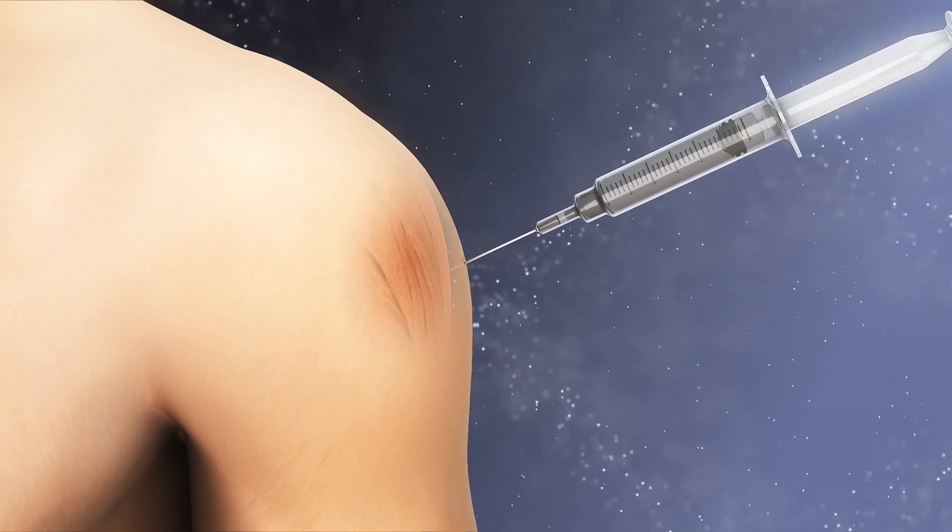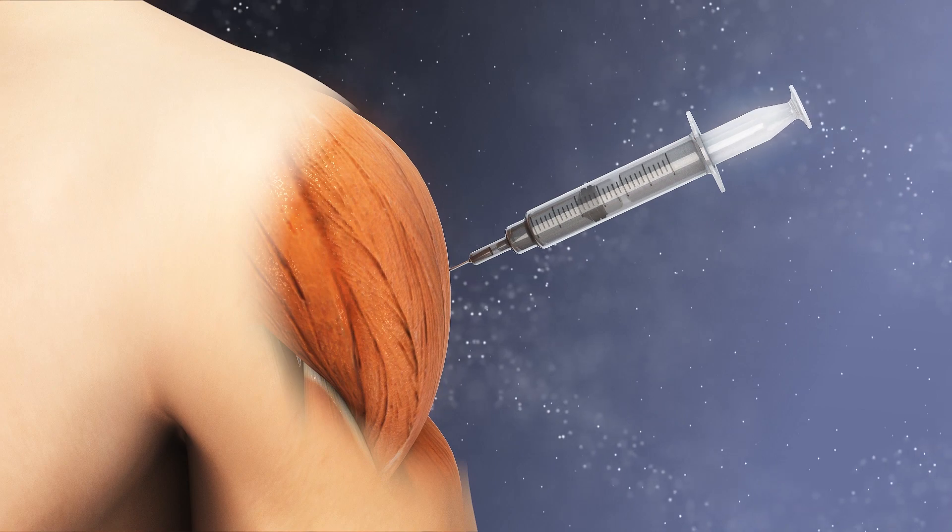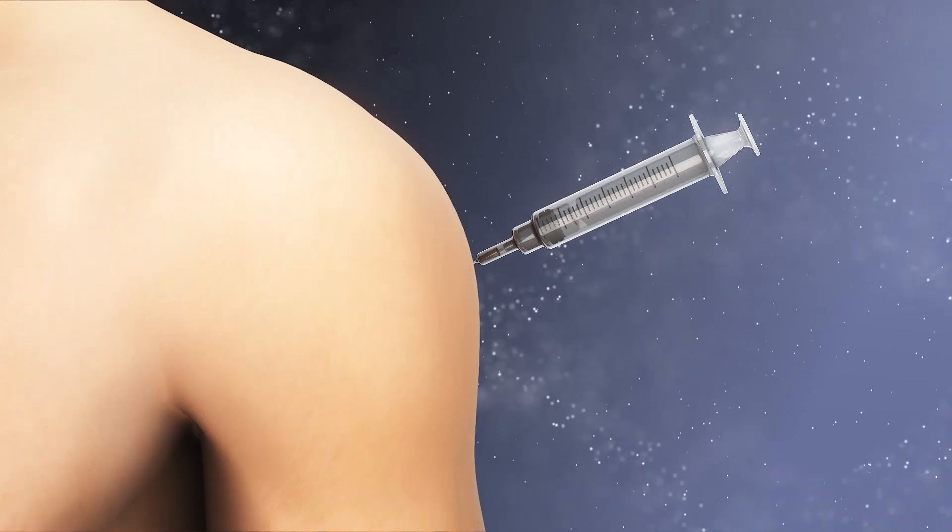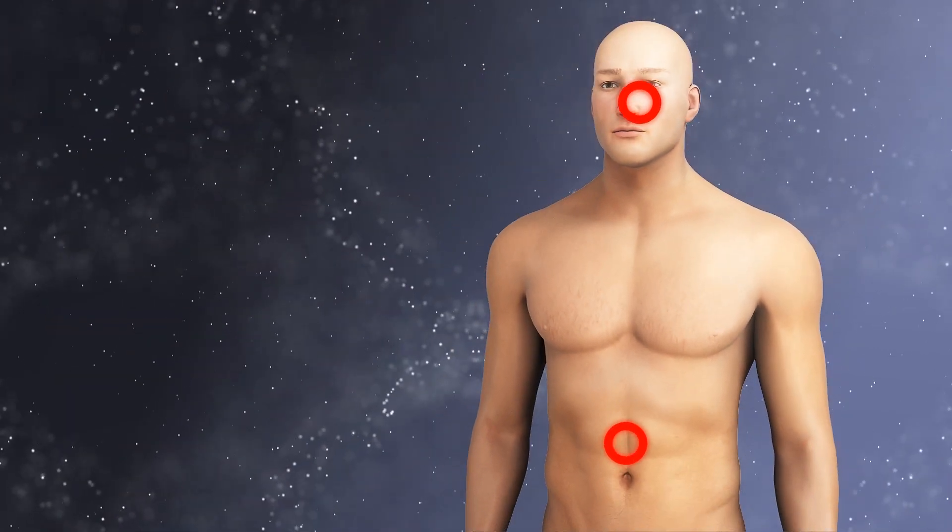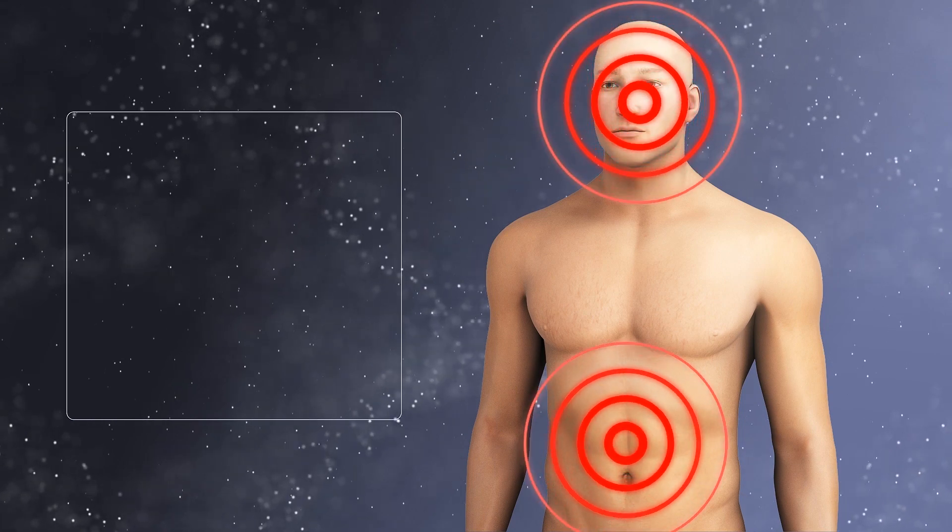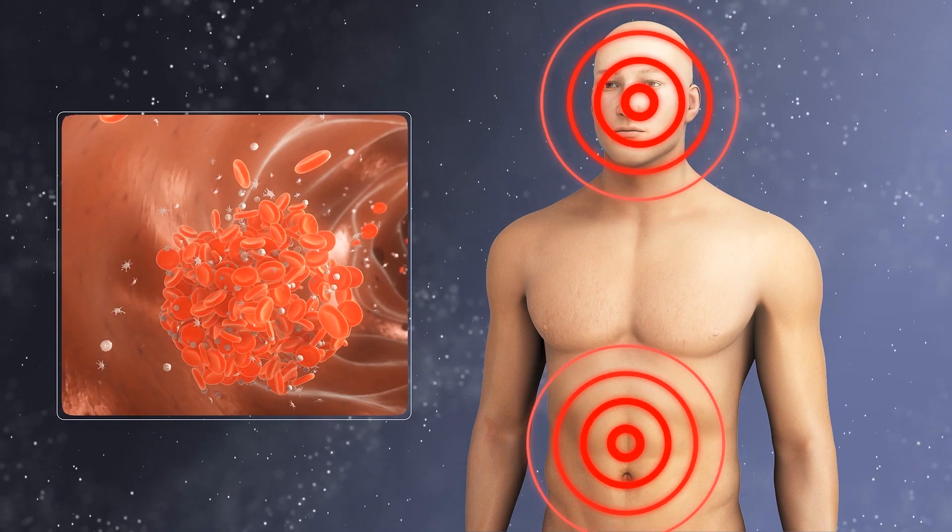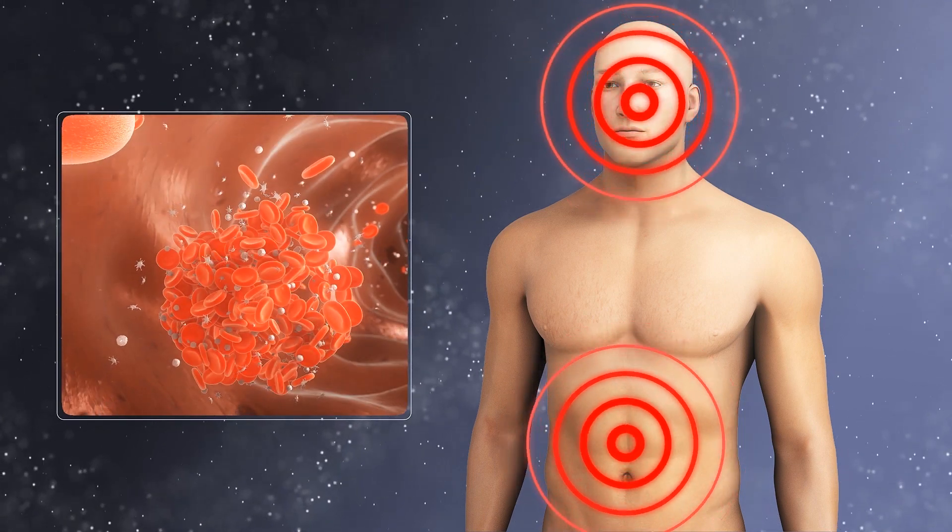The trigger for rare blood clots occurring in patients who received the Oxford-AstraZeneca COVID-19 vaccine may be a type of protein in the blood that is attracted to one element of the vaccine, according to a new study in the Science Advances Journal cited by the BBC.